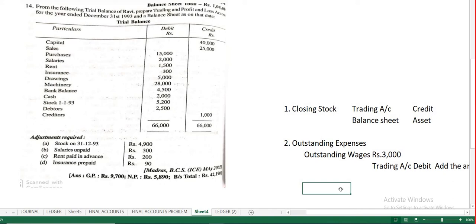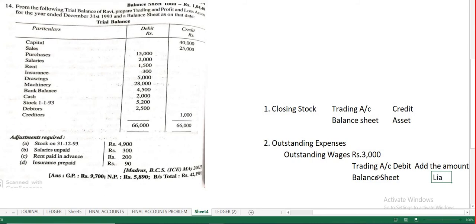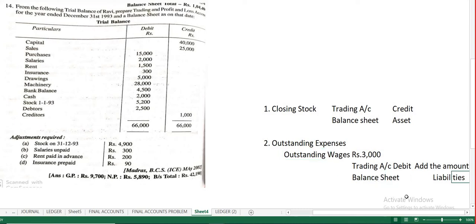The second effect of outstanding expenses is the balance sheet. Since you have to pay them in the future, it is an obligation — a liability. Outstanding wages or outstanding salary will appear under the liability side of your balance sheet, specifically under current liabilities.